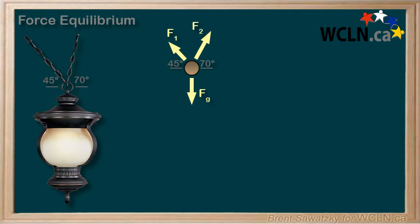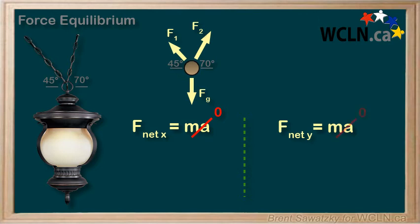Our second method for solving 2D equilibrium problems involves splitting our F net equation into two. One for the horizontal direction, or x direction, and one for the vertical direction, or y direction. That is, all the forces, or components of the forces, in the x direction, must add up to be zero, because acceleration is zero. And then, all the forces, or components of forces, in the y direction, must also add up to be zero.